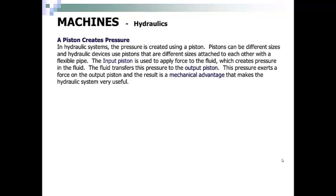A piston creates pressure. In hydraulic systems, the pressure is created using a piston. Pistons can be different sizes, and hydraulic devices use pistons that are different sizes attached to each other with a flexible pipe. The input piston is used to apply force to the fluid, which creates pressure in the fluid. The fluid transfers this pressure to the output piston. This pressure exerts a force on the output piston, and the result is a mechanical advantage that makes the hydraulic system very useful.